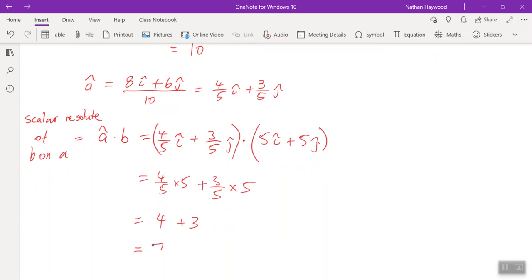Y1 times Y2. So you're left with 4 plus 3. So you've got the answer 7. So this is how much of B is on A, 7 units.